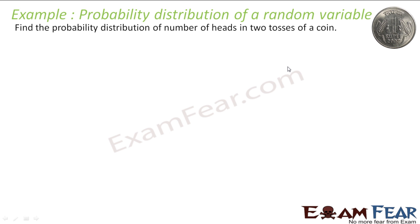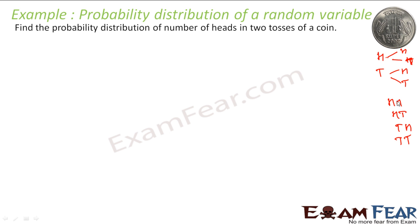Find the probability distribution of the number of heads in two tosses of a coin. This coin is tossed twice, so you may get head or tail in the first toss, and head or tail in the second. So you have head-head, head-tail, tail-head, tail-tail — these four options.